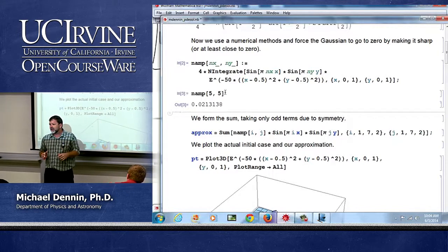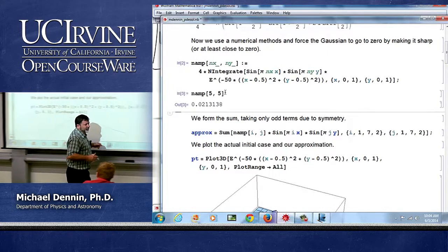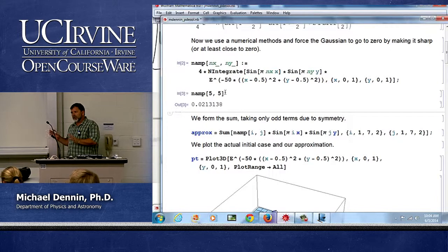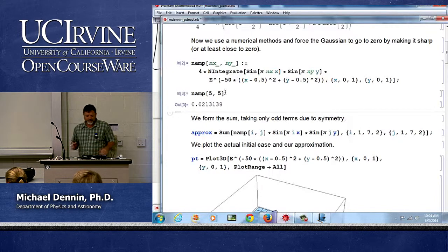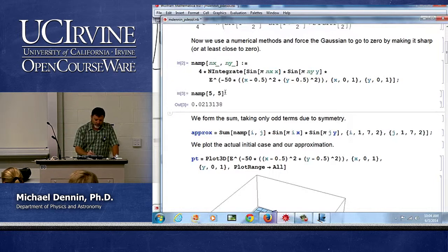What also hurt was when I first did my plots to check, I plotted from minus 5 to 5. My Gaussian looked fine but the approximation doesn't look so fine minus 5 to 5.